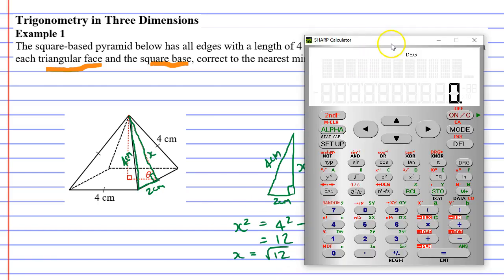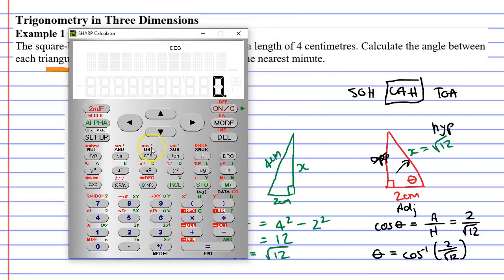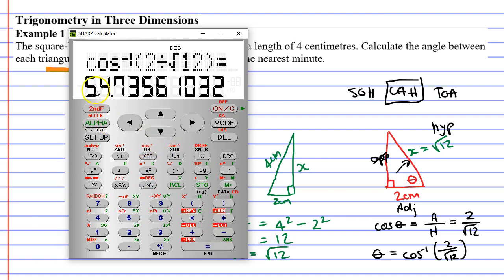So let's bring up our calculator. And on my calculator, I'm going to go second function cos. I need some brackets. 2 divide root 12. Close the brackets, equals. And here's my solution here. But they want it to the nearest minute. So I'm going to go second function DMS. And this gives me the solution 54 degrees and 44 minutes.